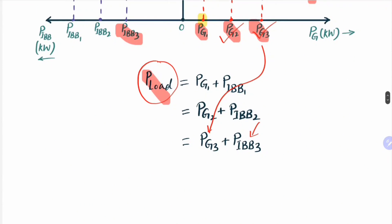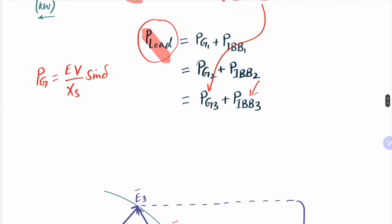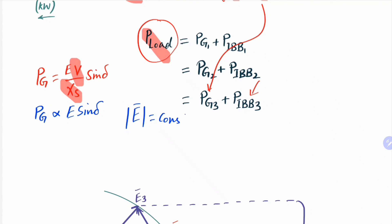Now, the active power pg is given by: pg = (excitation emf × terminal voltage) / (synchronous reactance) × sin(δ), where δ is the load angle. For this system of alternator connected to an infinite bus bar, the terminal voltage remains constant and synchronous reactance xs is also constant. So we may write pg is proportional to E sin(δ). We are discussing the case when mechanical input to the alternator is varied while keeping the excitation emf constant — that is, we are not changing the field excitation, just varying the governor set point.